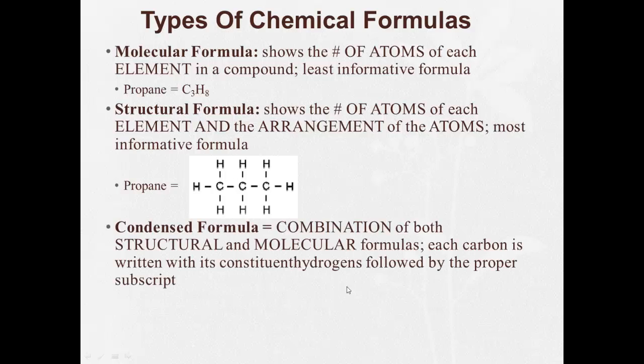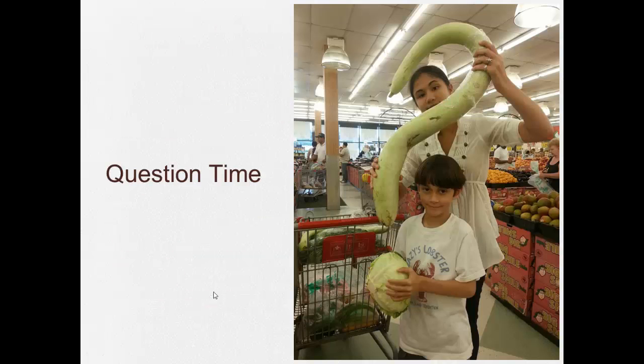Condensed formula is kind of a best of both worlds. It combines the structural and molecular formulas. Each carbon is written with its constituent hydrogens, followed by the proper subscript. So we could write this, a carbon and one, two, three hydrogens attached to it, a carbon with two hydrogens attached to it, and another carbon with three hydrogens attached to it. So propane there ends up being CH3, CH2, CH3.